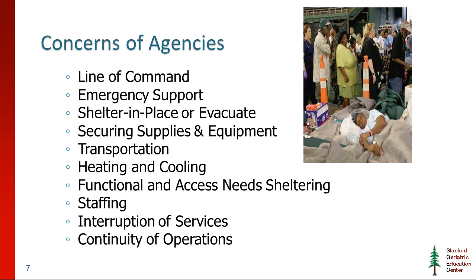Who's in charge? Line of command is a big issue, especially for agencies. Functional and access needs populations need the support of agency staff and agency membership or eligibility. If the agencies aren't taken care of, they won't be able to support the FAN population. So we've got two customers: the FAN population and those who support and respond to them. In Kentucky, we call it FAN — functional and access needs.